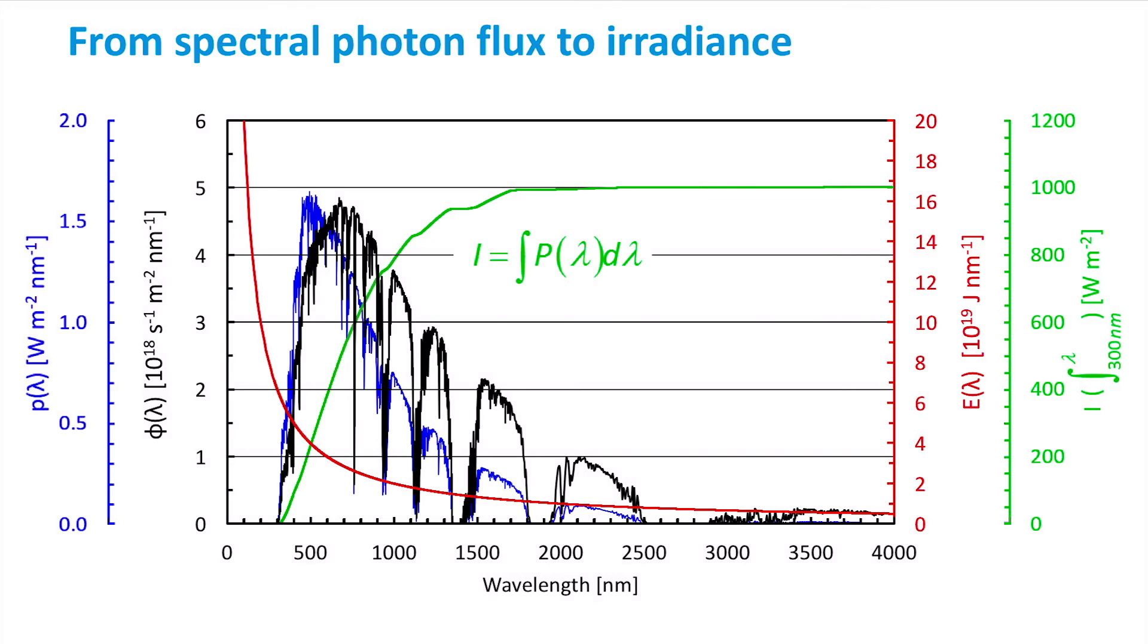As we can see, the irradiance integrated over the full solar spectrum equals 1000 watts per square meter, which is called one sun illumination and corresponds to the typical standard test conditions.